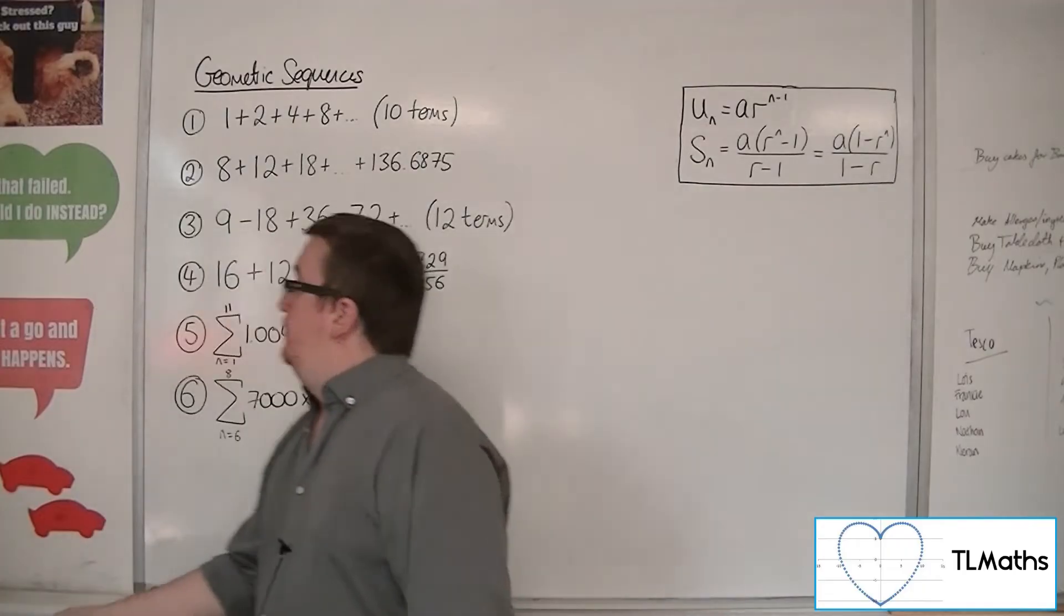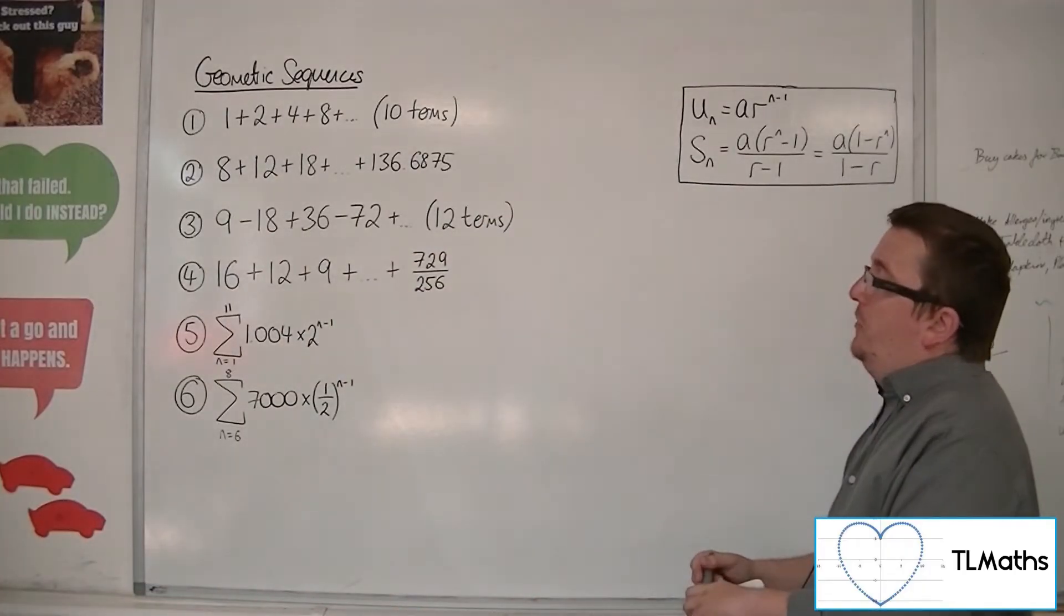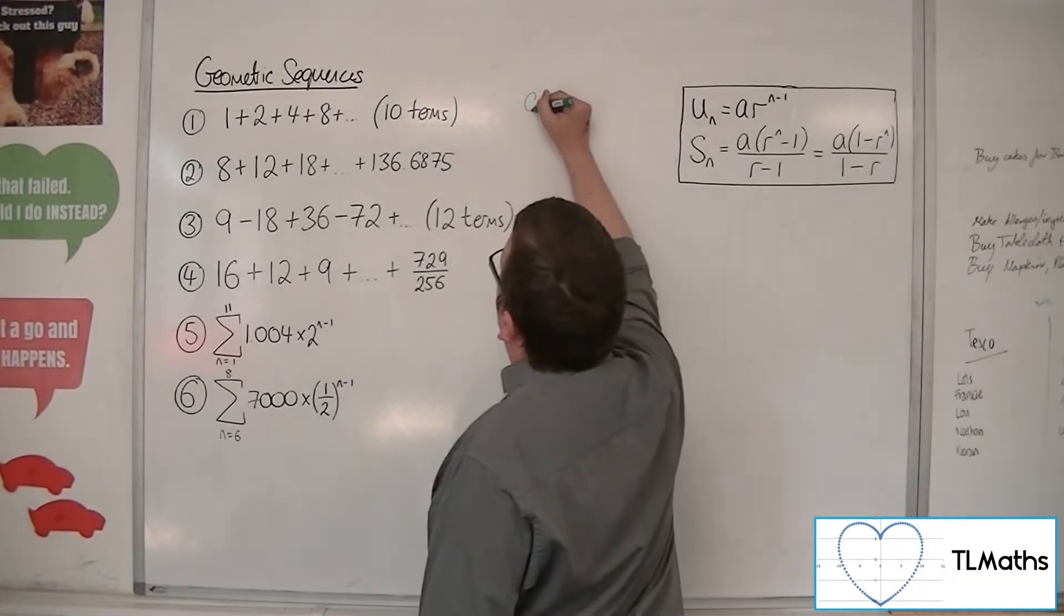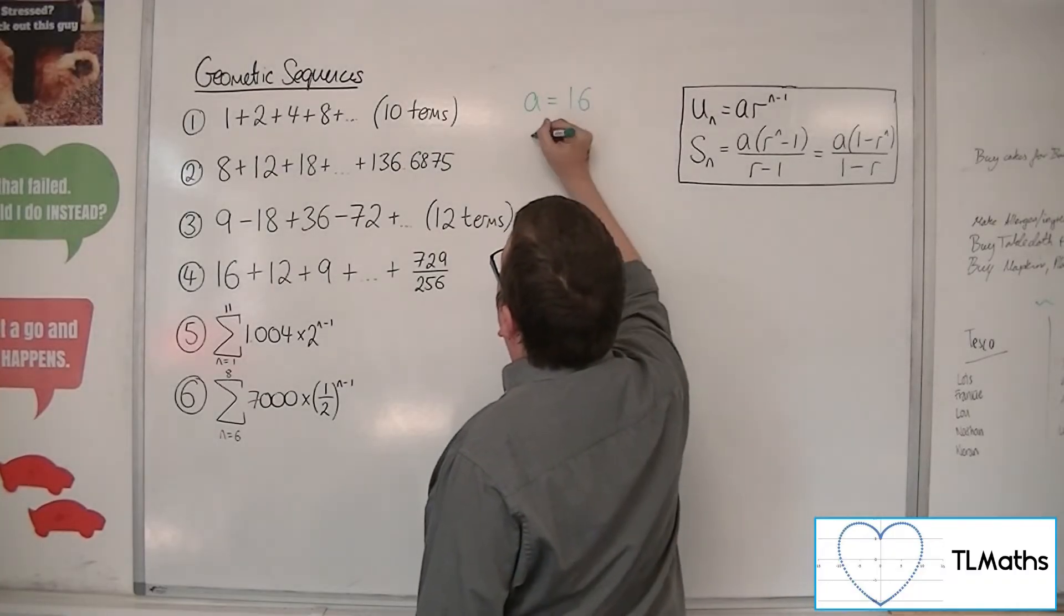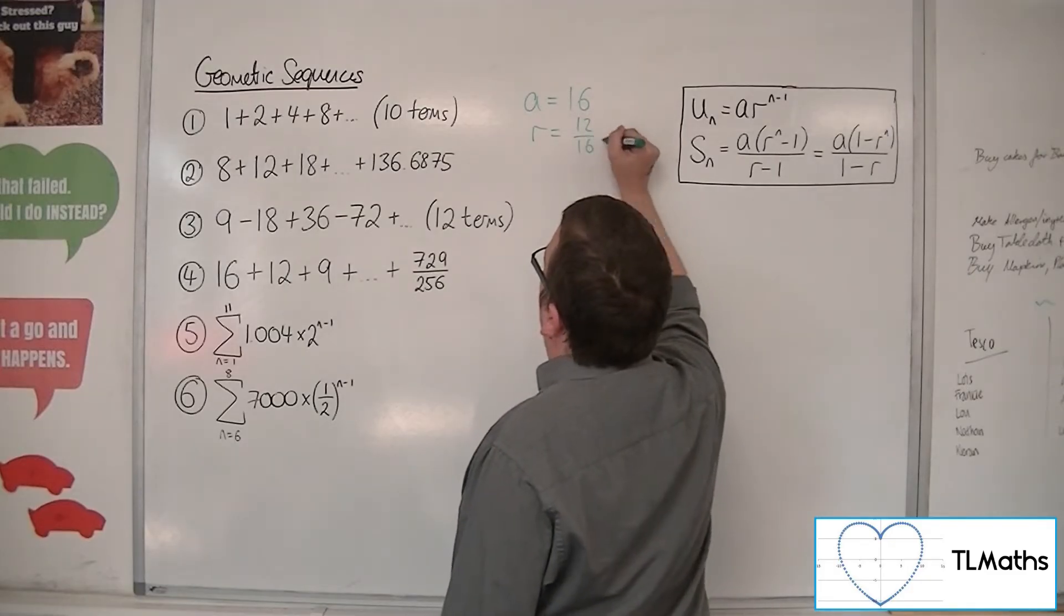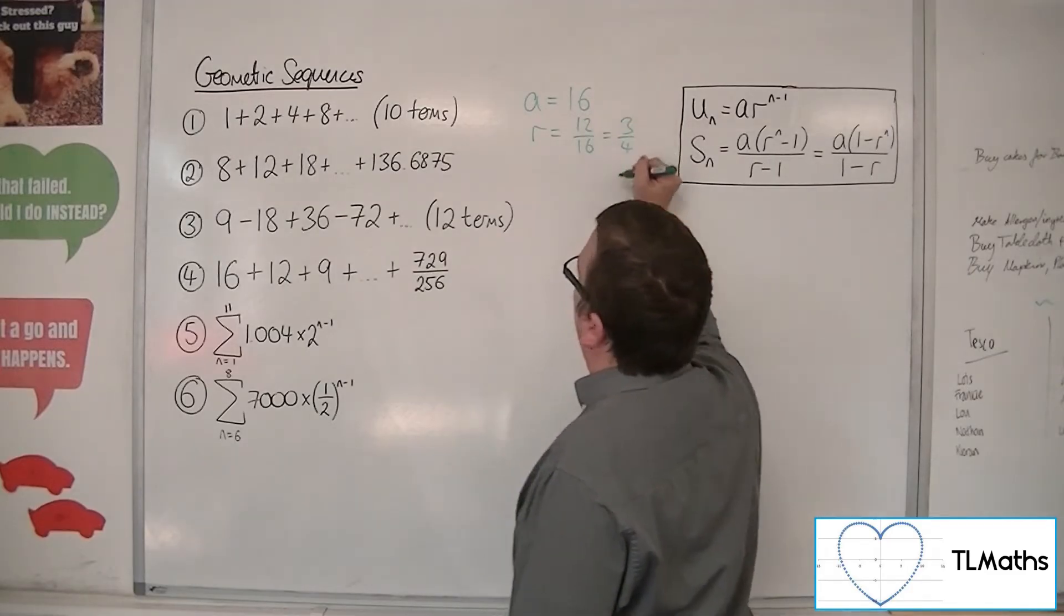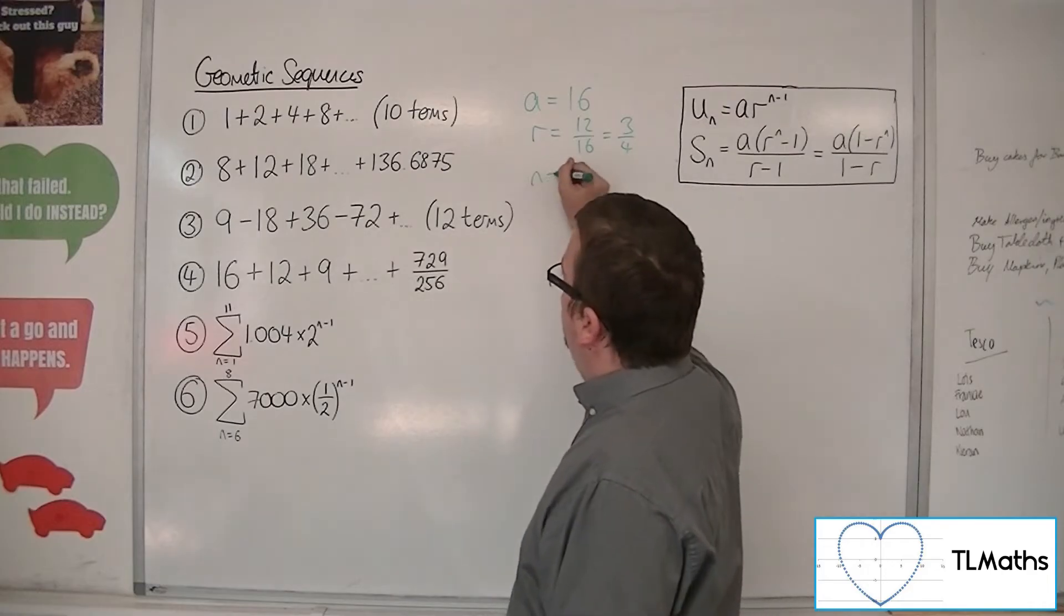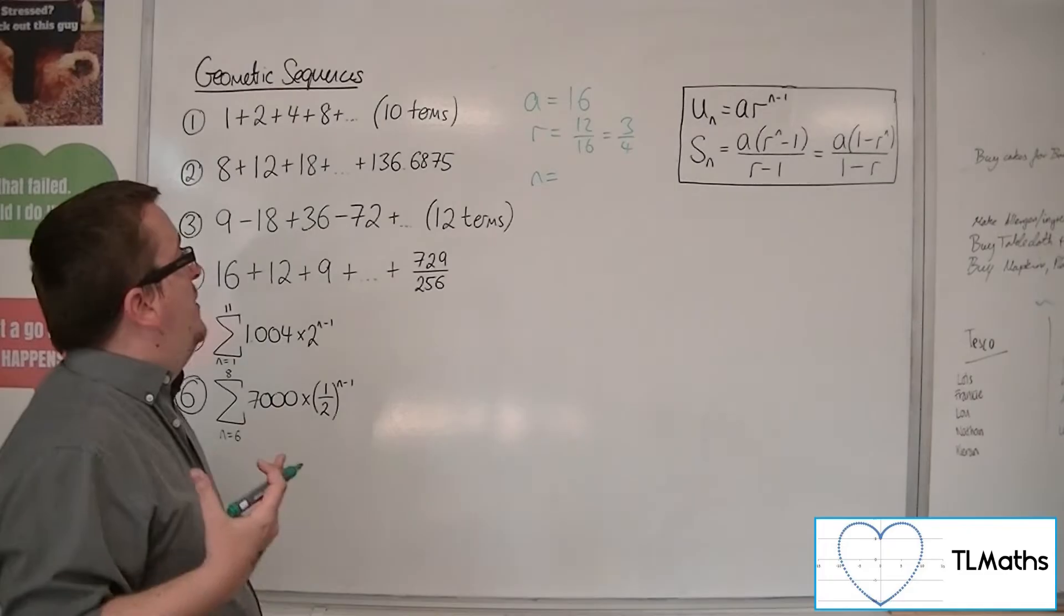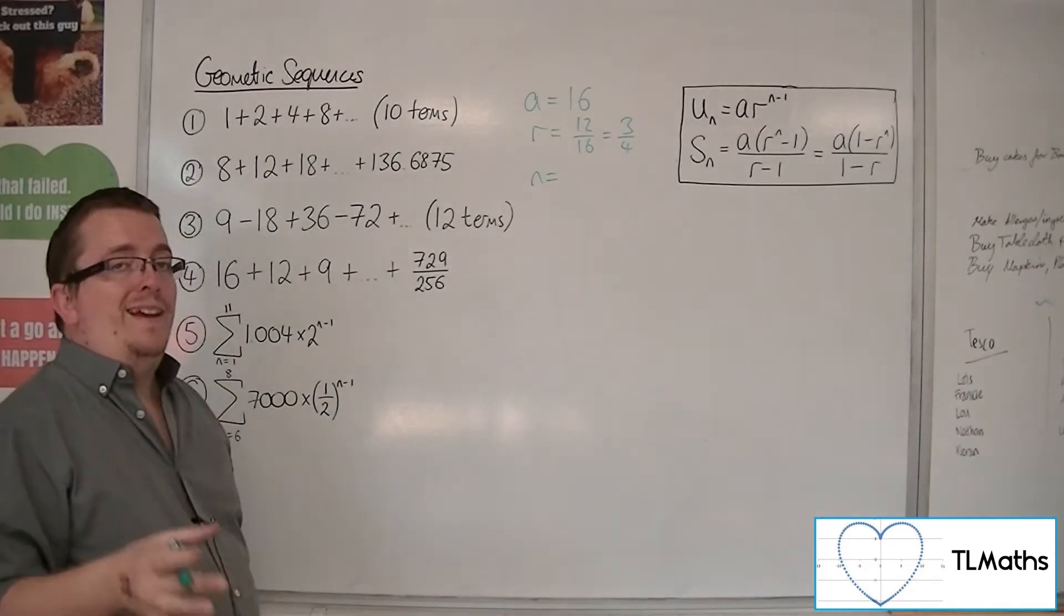Now, number 4. 16 plus 12 plus 9 plus etc., up to 729 over 256. A is clearly 16. The common ratio is 12 over 16, which is 3 quarters. n, we don't know what that is. So we're going to have to use a similar technique to what we did in number 2 in order to get there.